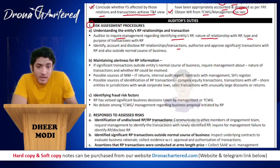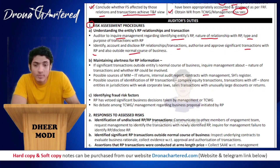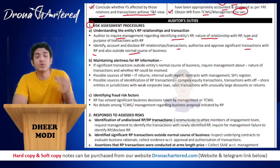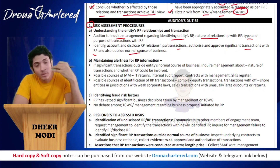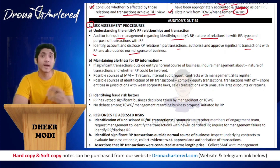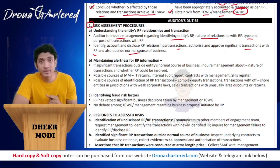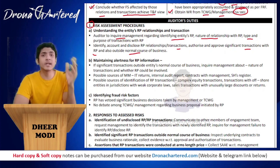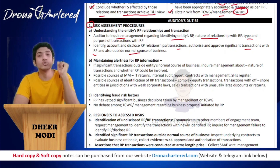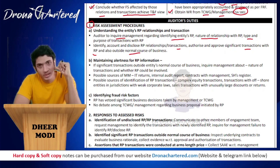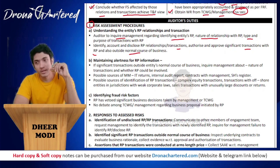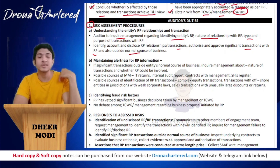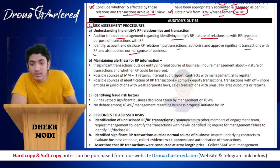The auditor will also check whether all related party transactions have been authorized and approved, including transactions outside the normal course of business — that is, transactions the entity would not ordinarily enter into with a non-related party, but has entered into because the counterparty is a related party.